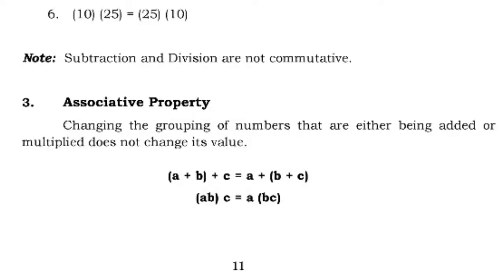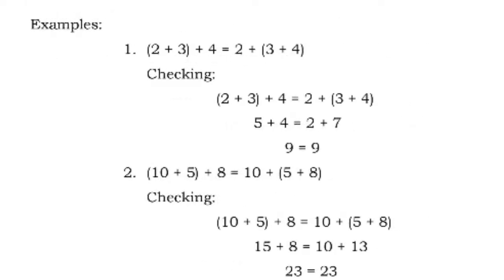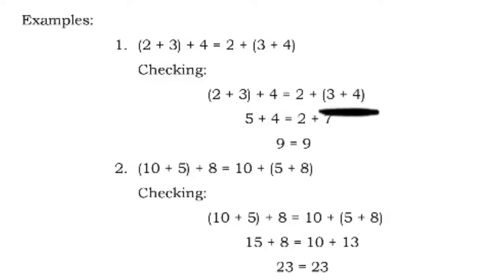Number 3, the associative property: changing the grouping of numbers that are either being added or multiplied does not change the value. For addition: the quantity of A plus B, plus C, equals A plus the quantity of B plus C. For example, the quantity of 2 plus 3, then plus 4, equals 2 plus the quantity of 3 plus 4. Checking: 2 plus 3 is 5, plus 4 equals 9; and 3 plus 4 is 7, plus 2 also equals 9. They are equal.